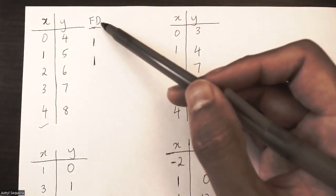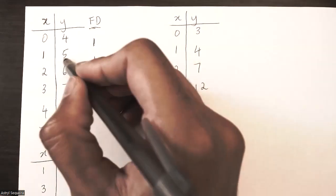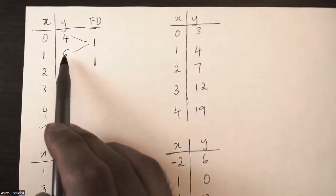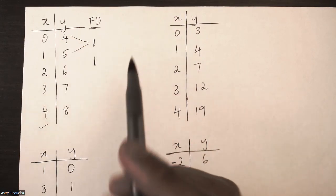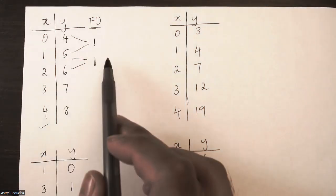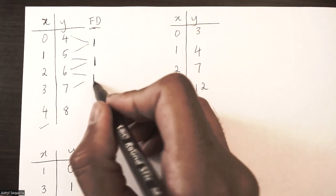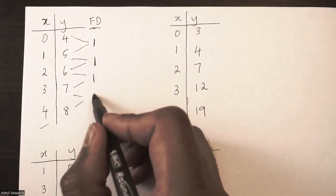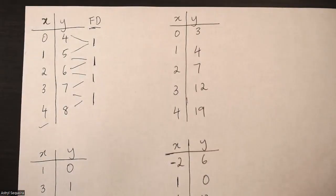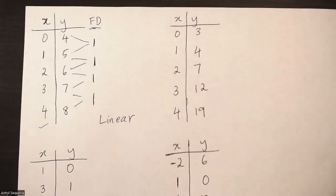Now I'm going to look at my y values and do my first differences column. I simply take the second y value and subtract the first: 5 minus 4 is 1. Third minus second: 6 minus 5 is 1. Then 7 minus 6 is 1, and 8 minus 7 is also 1. If your first differences are all identical, it means your equation is linear and the problem is over.